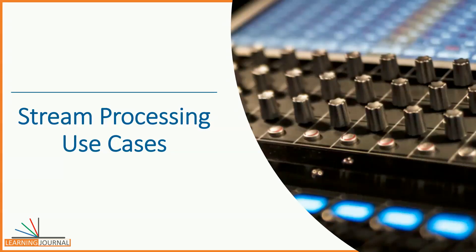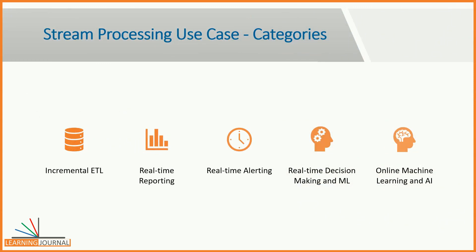Everything covered in the previous video should have built a general perception of what stream processing means and what we do in real-time stream processing. To cement the idea and concrete your understanding, I am going to talk about five different technical categories where stream processing is applied. I will also give you some specific business examples. These categories are arranged in increasing order of complexity, and a typical business may start with the first category and progress toward more complex use cases.